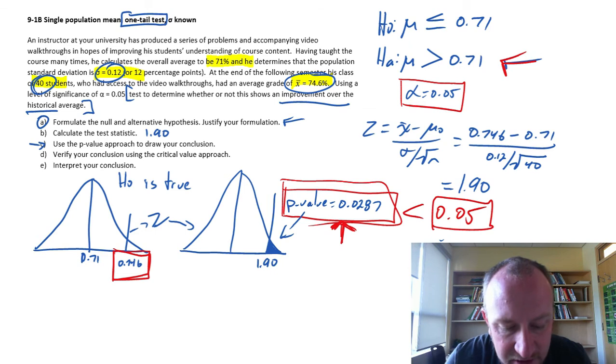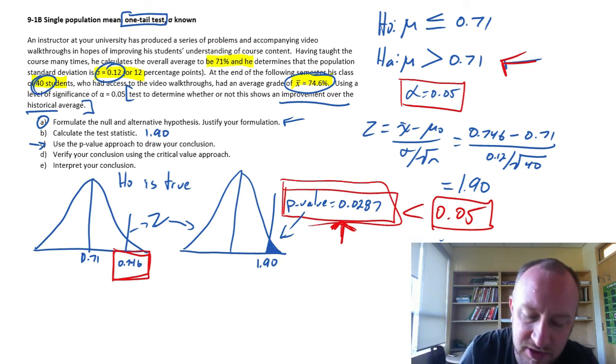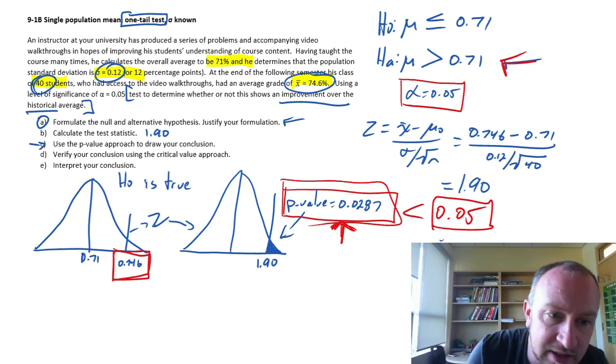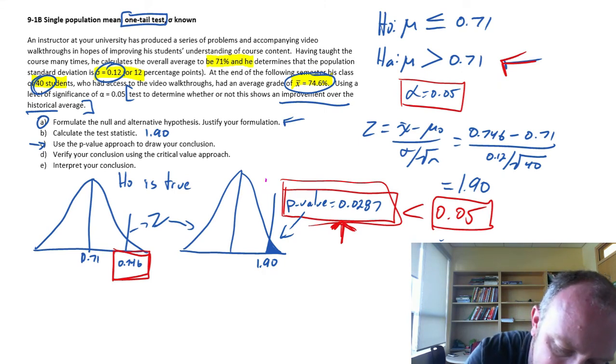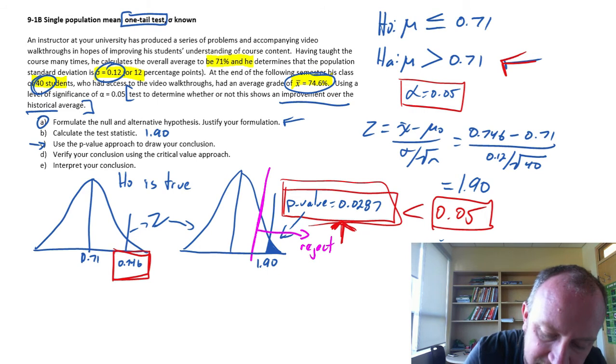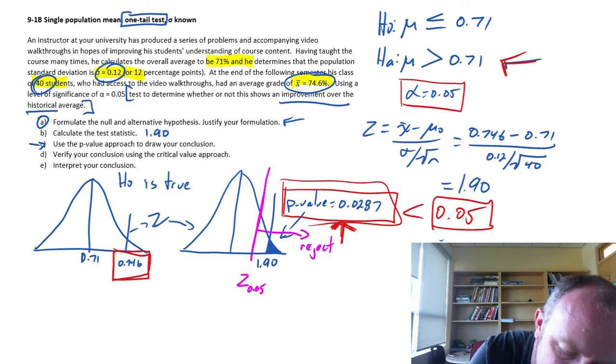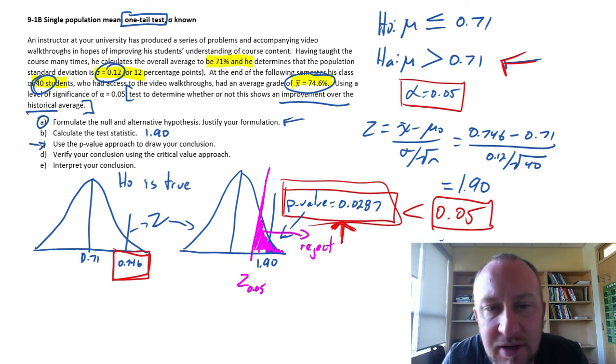Part D, verify your conclusion with the critical value approach. All this means now, is we're going to go to our tables, and find what is that critical value that defines that rejection space. In other words, I want to find that z-value that corresponds with our alpha, which is 0.05.